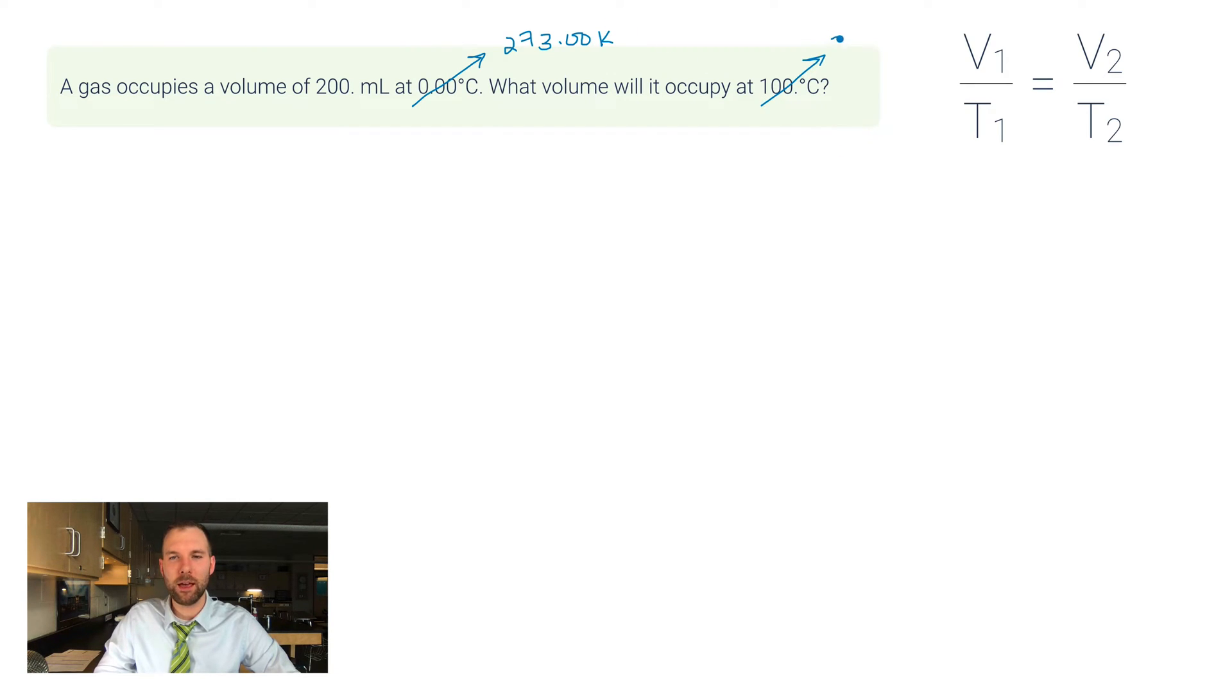And then we've got this volume of 200 milliliters. These two things have to go on the same side of the equation, and I usually just set V1 and T1 to be the side that has a complete set of information. Truthfully, you could plug those in as V2 and T2 and you'd get just the same answer.